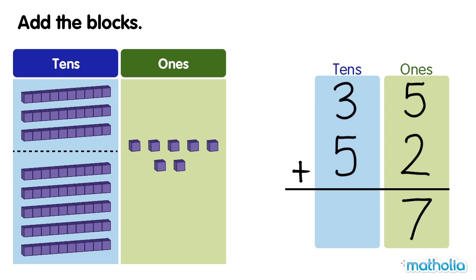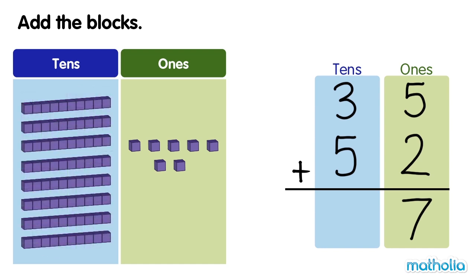There are seven ones. Next, add the tens. Three tens plus five tens equals eight tens. There are 87 blocks. 35 plus 52 equals 87.